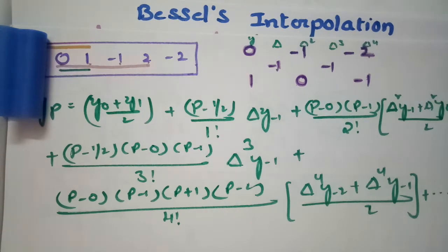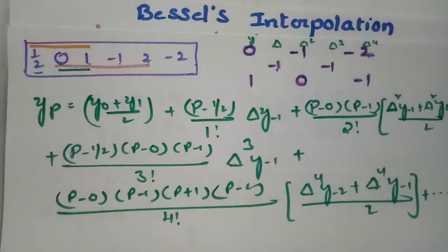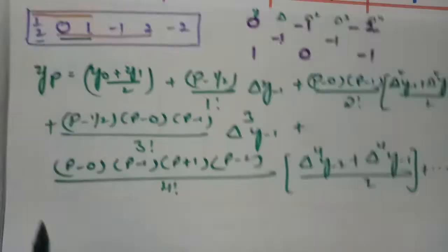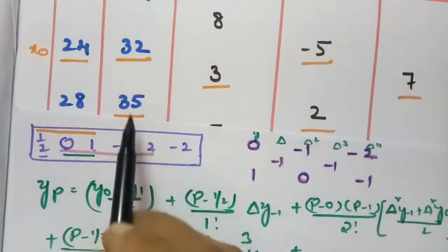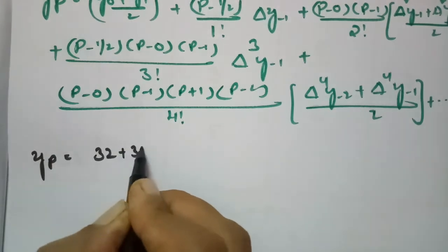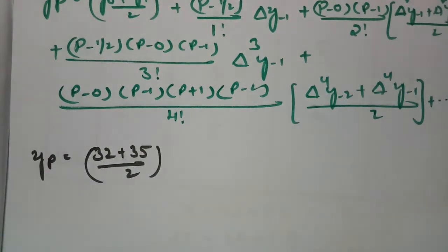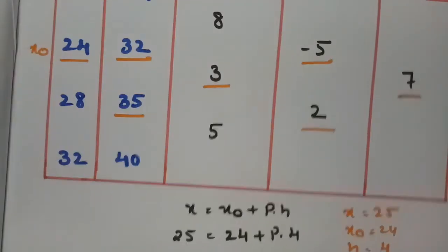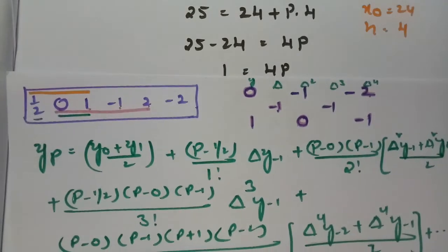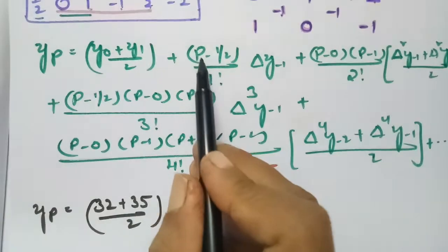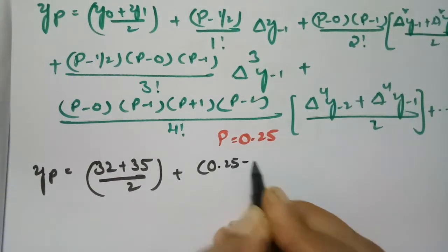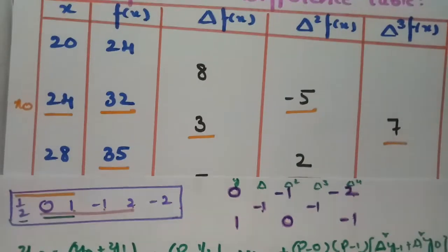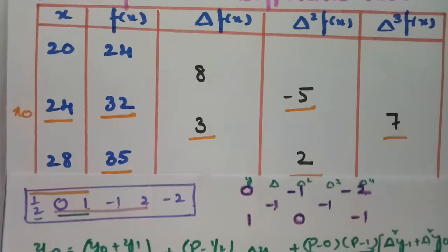Now I will substitute all the values. y₀ is 32 and y₁ is 35. So yₚ equals (32 + 35)/2, which is 33.5. Then we add (p minus 0.5) divided by 1 factorial times Δy₋₁, where Δy₋₁ equals 3. Our p value is 0.25.